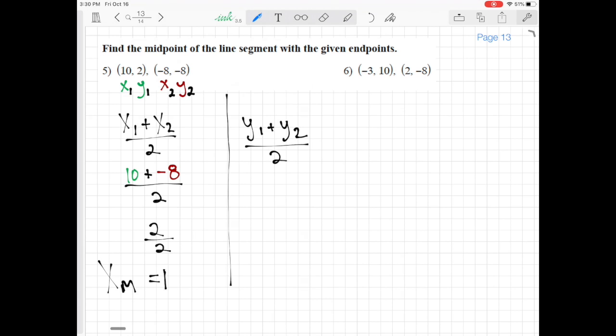Start plugging in what we know. y1 is 2, y2 is negative 8. Then we add them together and divide by 2.